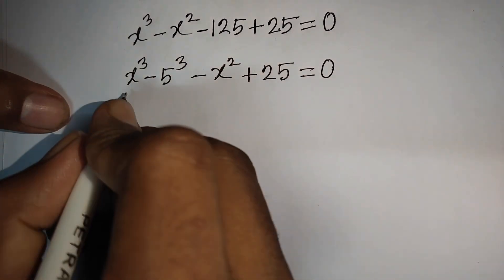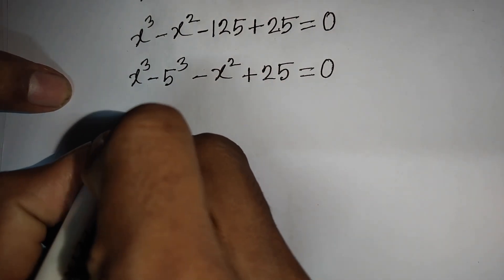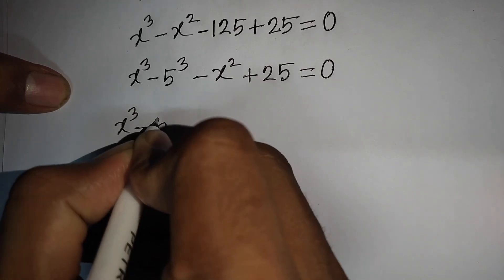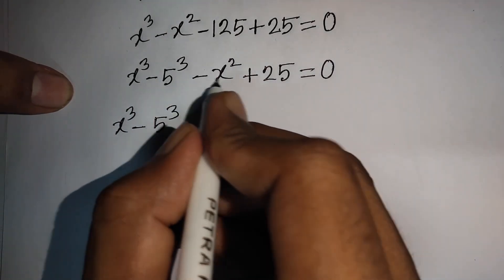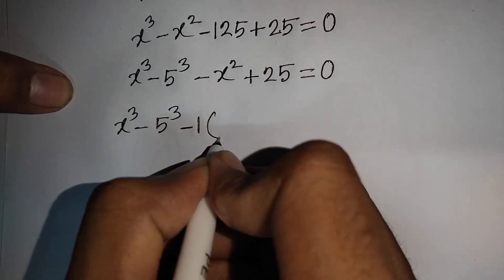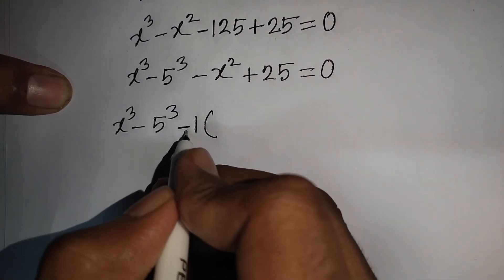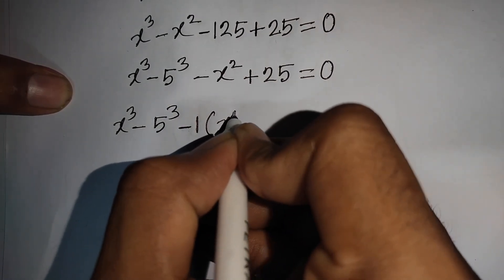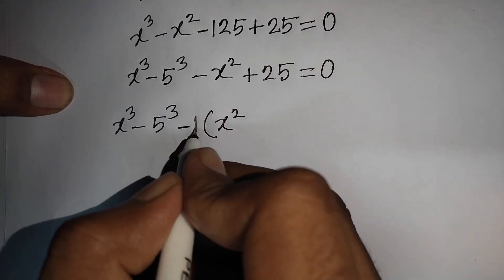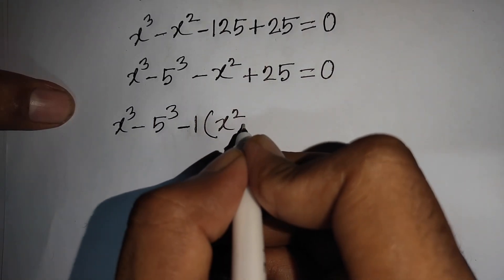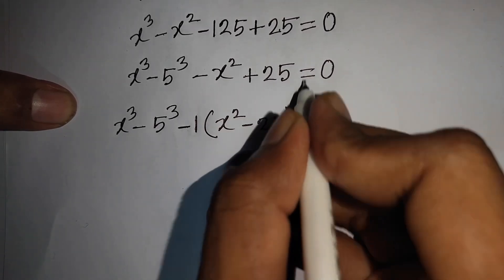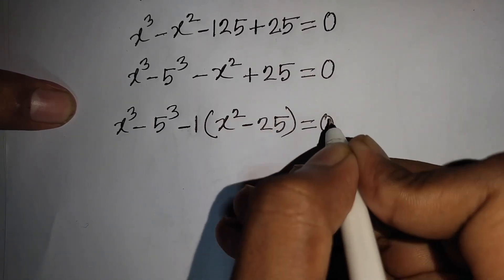Now we have x³ minus 5³. From the remaining terms, factor out negative 1, so negative 1 is outside the bracket, giving us negative 1 times (x² + 25) divided by minus 1, which means minus 25. Bracket close equals 0.